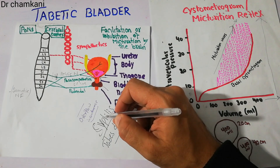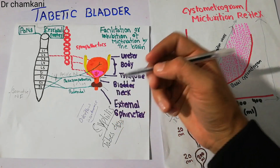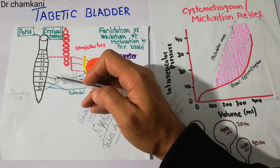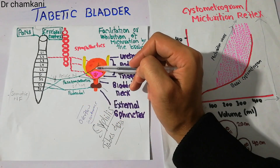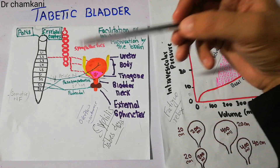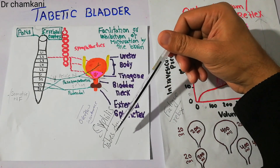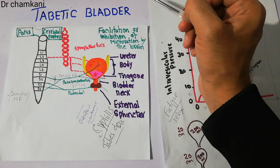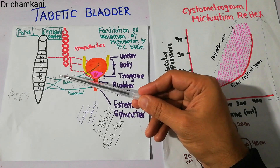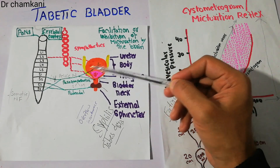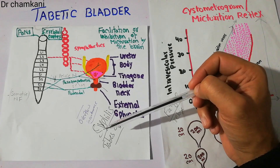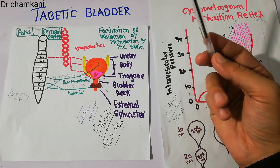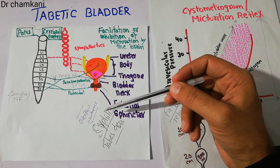Syphilis is a bacterial infection caused by Treponema, and it leads to a condition called Tabes dorsalis, in which fibrosis of the dorsal root ganglion occurs. This causes damage to the nerve fibers carrying signals from the urinary bladder to the spinal cord. Damage of nerve fibers due to Tabes dorsalis leads to an atonic bladder known as Taptic Bladder. So Taptic Bladder is the disruption of nerve fibers caused by Tabes dorsalis, which is itself caused by syphilis.